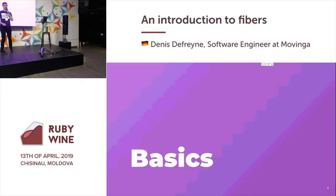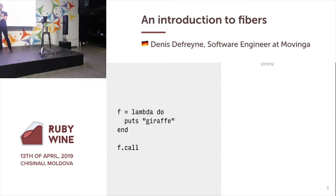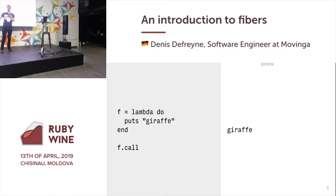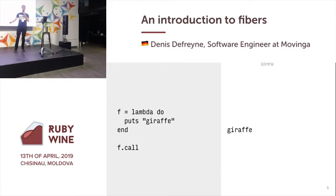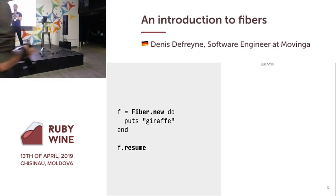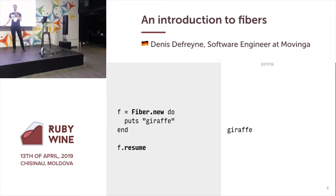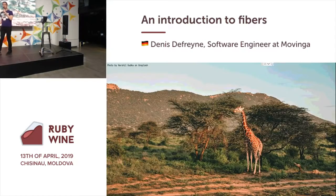Let's dive into the basics. What I have here is a lambda, an anonymous function, that prints 'giraffe'. So if I call it, the output is 'giraffe'. Now I can replace lambda with Fiber.new, and I can replace call with resume and run this piece of code — this will also print 'giraffe'. So in a way, the Fiber is a bit like a lambda.